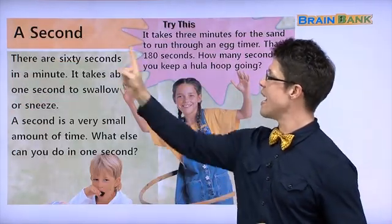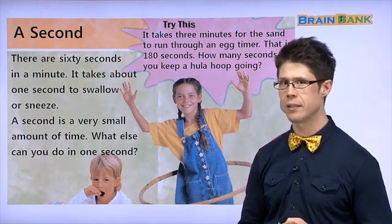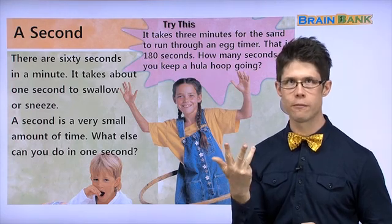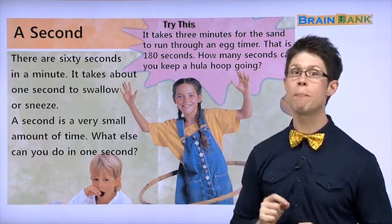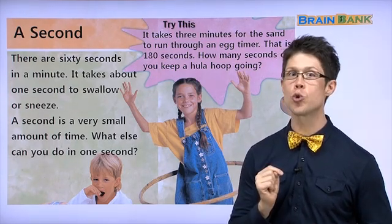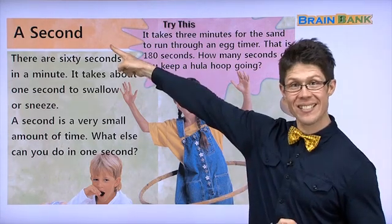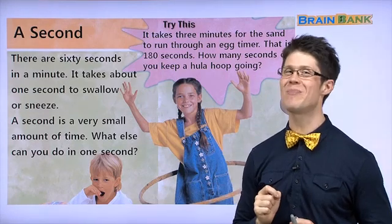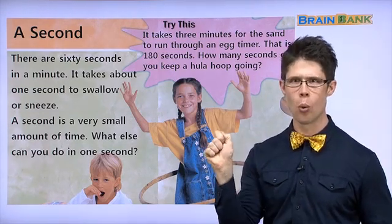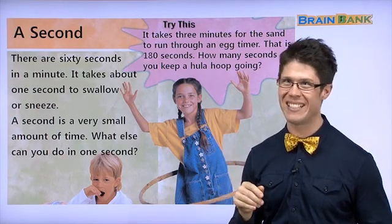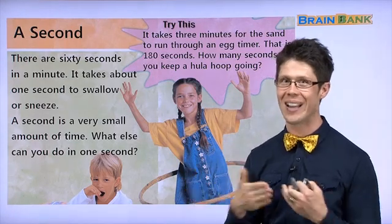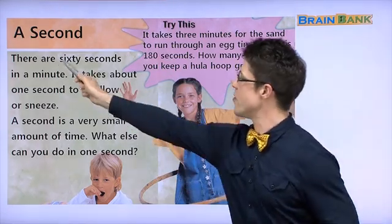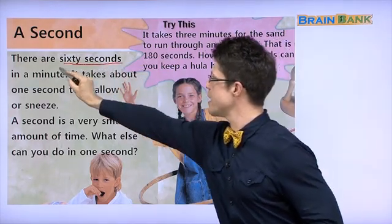Now let's look at a second. What's a second? Well, remember, one minute — we can count to 60: one, two, three, four. 일 분은 육십 초 있어요. What is it? 초. That's right. 초 is a second. One minute has 60 seconds. 일 분은 육십 초 있어요. We can count to 60: one, two, three, four, five, six, seven, eight, nine, sixty. I counted very fast. 빠르게 카운트 했죠. That is 60 seconds.